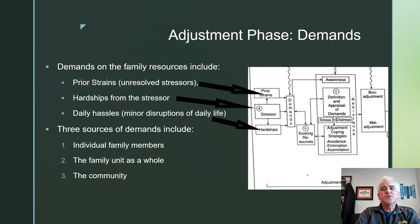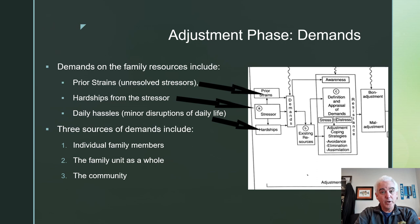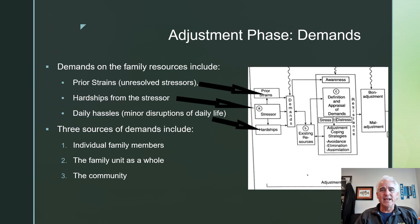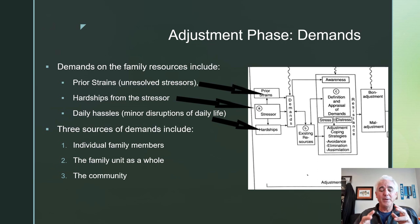As we explore the adjustment phase, we need to think about the demands that are facing the family — things that are demanding their time and energy. Such things might include prior strains or unresolved stressors from the past, hardships from the current stressor, and the daily hassles — minor daily disruptions of life that continue to build on stressors. The three main sources of demands include individual family members, the family unit as a whole, and the community around them.